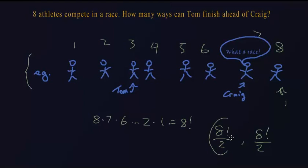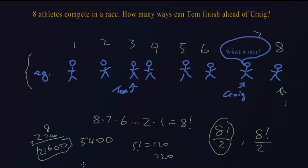So for a total of eight factorial divided by two. This is going to get messy. So there are, I believe, 21,600 ways Tom can finish ahead of Craig in the 100 meter dash.